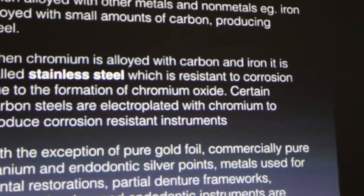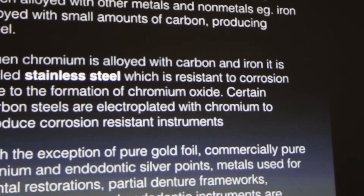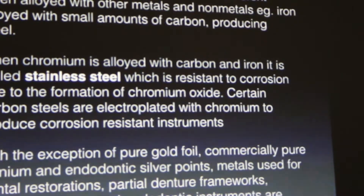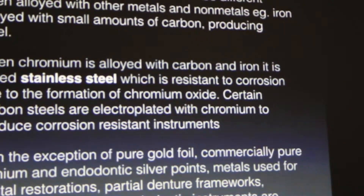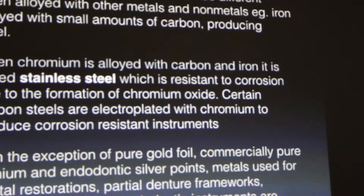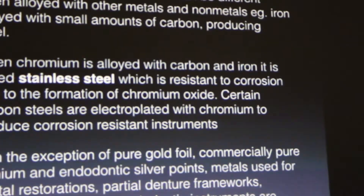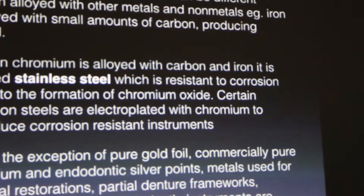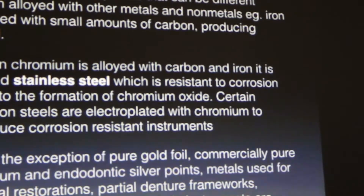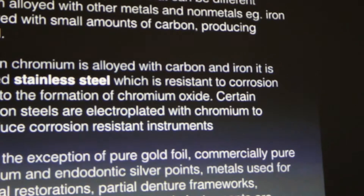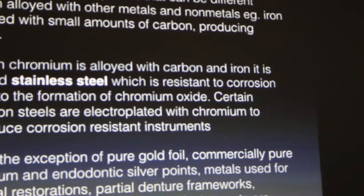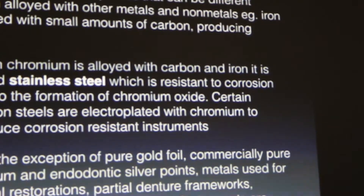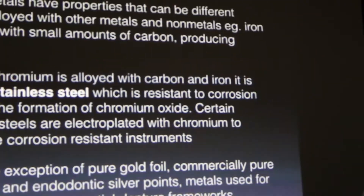When you alloy gold, the strength increases but it cannot be compacted. Gold foil needs to be compacted in the cavity, and compaction can only take place if you have pure gold, which is soft — you press it and fill up the cavity. When gold is alloyed, it cannot be compacted, so it has to be used in the cast form.